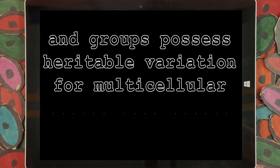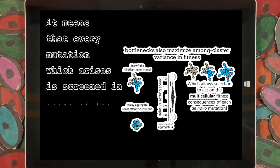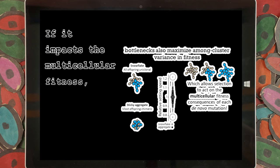Multicellularity happens when selection is acting on groups, and groups possess heritable variation for multicellular traits that affect fitness. And because you have these regular bottlenecks in this life cycle, it means that every mutation which arises is screened in terms of its multicellular fitness consequences. If it impacts their multicellular fitness, then selection has a chance to act on that. These experiments are important because it's one of the first times that we've been able to observe in the laboratory exactly what happens when organisms at one level merge to form an organism at a higher level. And what's so striking about what we've found is both how easy it is for this transition to occur, and also how strict the requirements are for its occurrence. Once those requirements are met, all sorts of amazing adaptations can evolve. But the process can't even get started until all the cell's interests can be properly aligned. And further, there needs to be a way to ensure that helpful innovations can be easily adopted by the entire group.